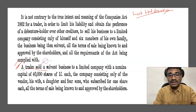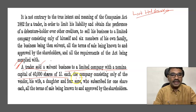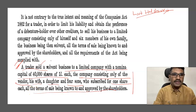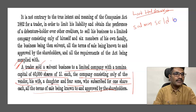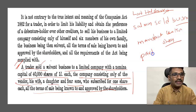The facts are very brief. A trader, that is Mr. Solomon, a solvent businessman, sold his solvent business to a limited company with a nominal capital of 40,000 shares. The company consisting of only the vendor, his wife, daughter and four sons, who subscribed for one share each, with all terms of the sale being known and approved by the shareholders. Mr. Solomon was doing the manufacturing of leather shoes, so he had a shoe business which was run in the nature of a partnership firm.